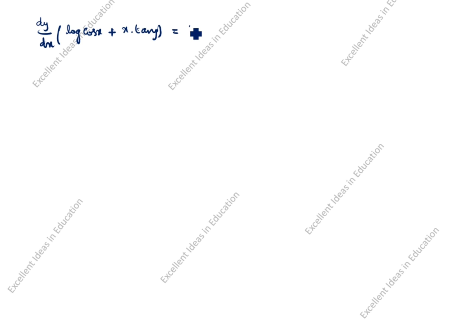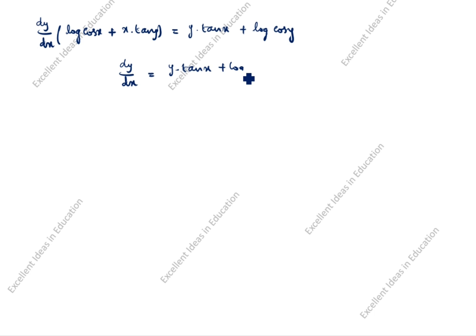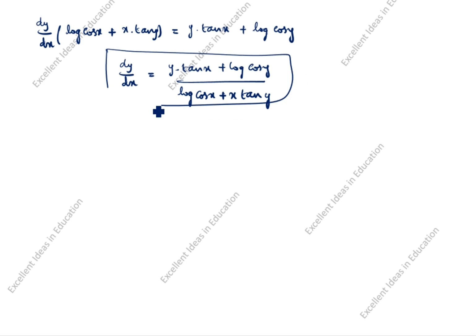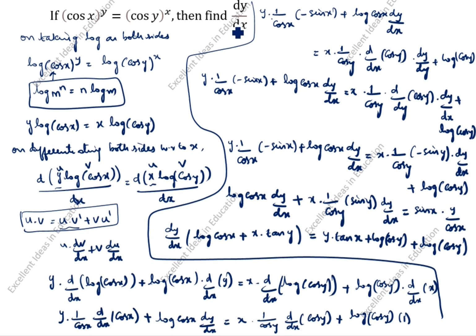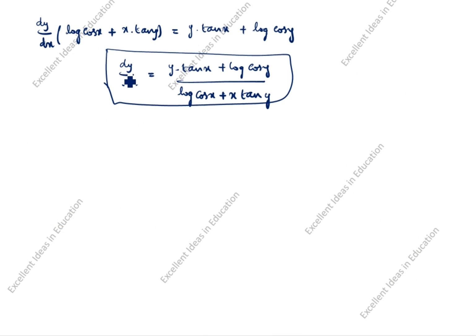So dy by dx is equal to (y tan x plus log cos y) divided by (log cos x plus x tan y). This is the answer. We can verify: find dy by dx — and we got the answer dy by dx. Thanks for watching this video.